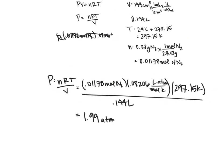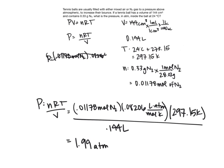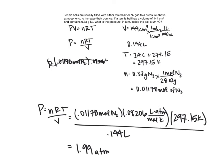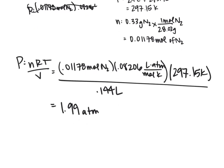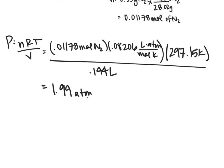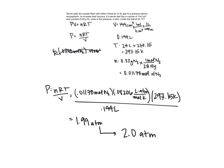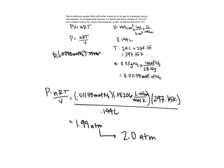We need to check our sig figs. Two of our values only have two sig figs, so when we apply our significant figure rules, we round to 2.0 atmospheres of pressure inside the tennis ball. PV equals NRT is pretty versatile — in this case we solved for pressure, but you could solve for any of the variables.